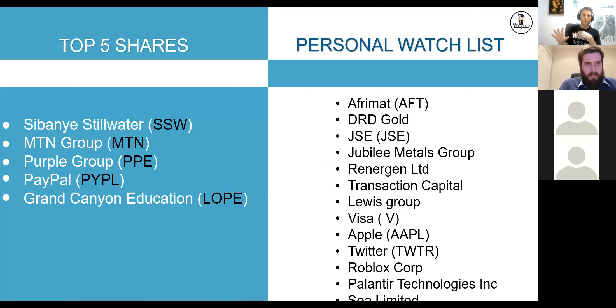I'm not saying go and copy this or go and buy them tomorrow because I have lower purchase prices than what the current prices are now. And then you'll see my watch list also to the right. So the companies I'm currently invested in, my personal name is Sibanye, MTN, Purple Group, PayPal, and Grand Canyon Education.